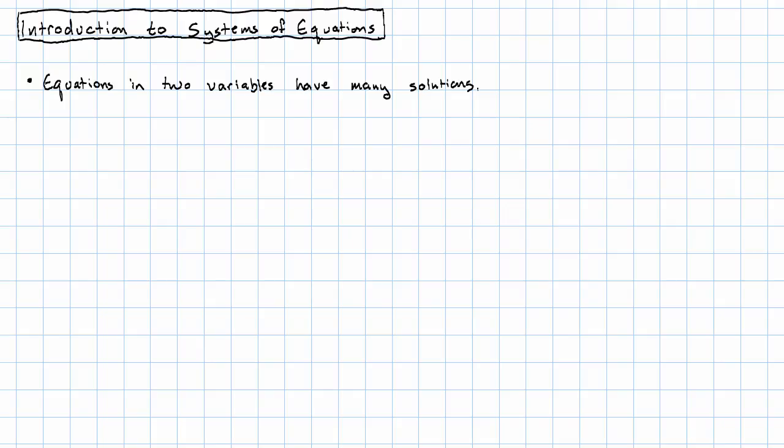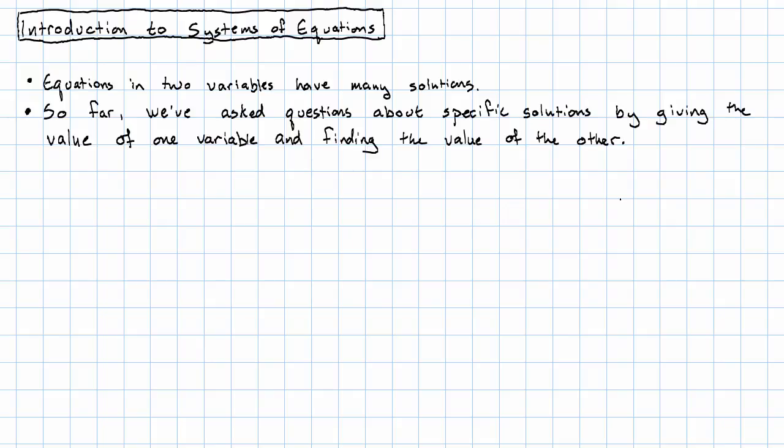and finding the associated value of the other. In general, in fact, in order to specify a specific solution to an equation in two variables, we need more information. But sometimes that additional information doesn't just take the form of giving the value of one variable. Instead, it takes the form of another entire equation.